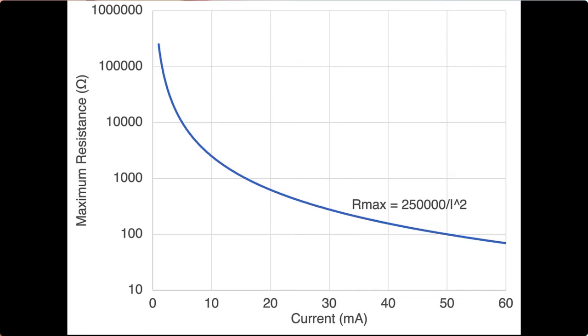Using that quarter-watt maximum, we can determine a relationship between the current that our constant current source is set to and the maximum resistor value that we can use. That would be in a series arrangement.